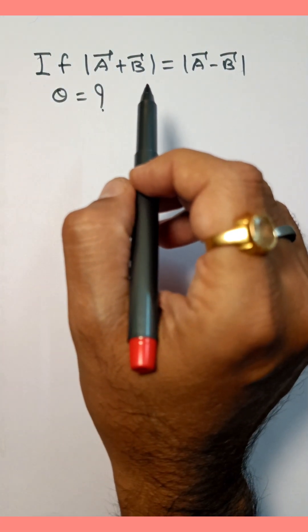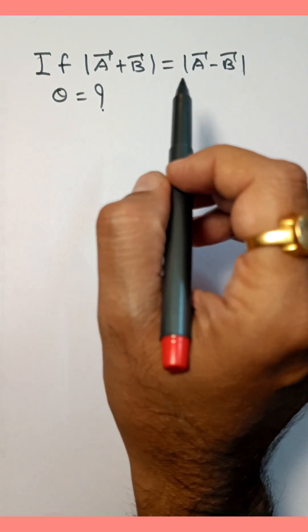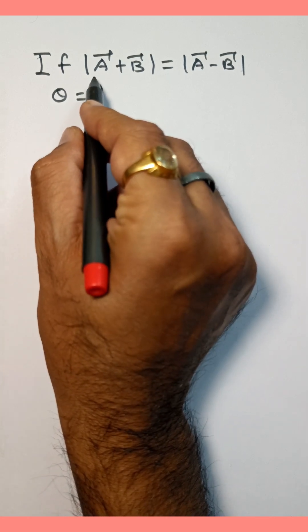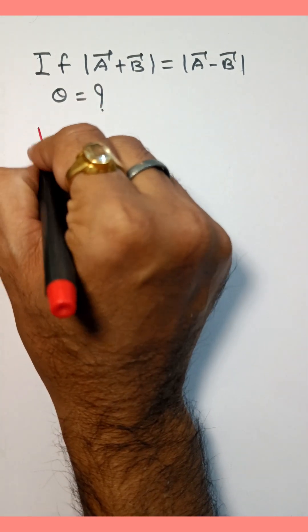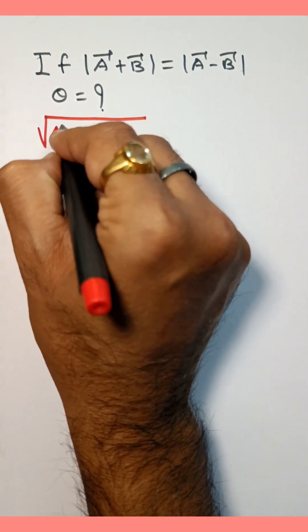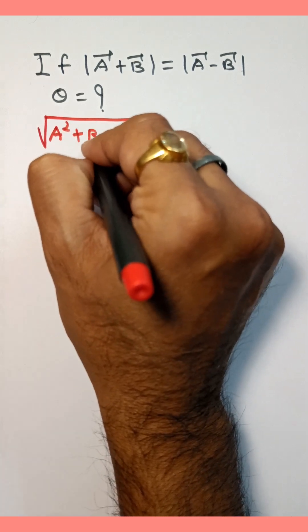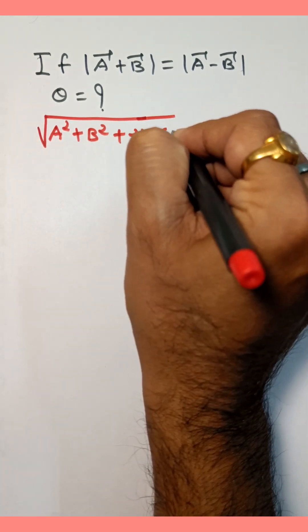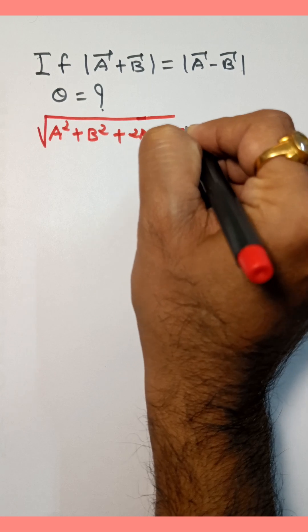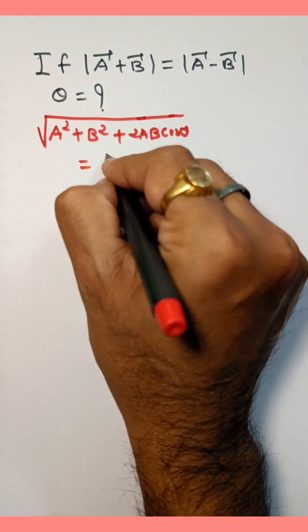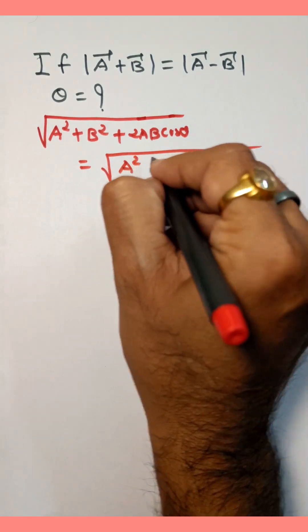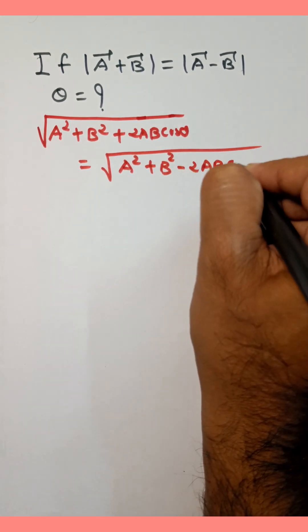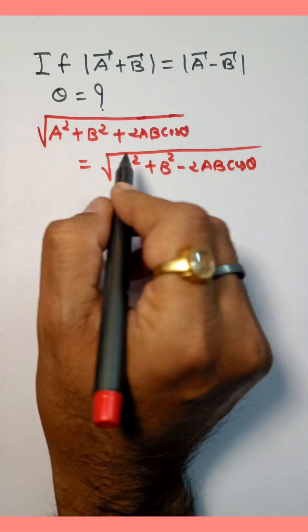If mod of vector (a + b) is equal to mod of vector (a - b), find the angle between a and b. The formula for mod(a + b) is square root of (a² + b² + 2ab cosθ), and mod(a - b) is square root of (a² + b² - 2ab cosθ).